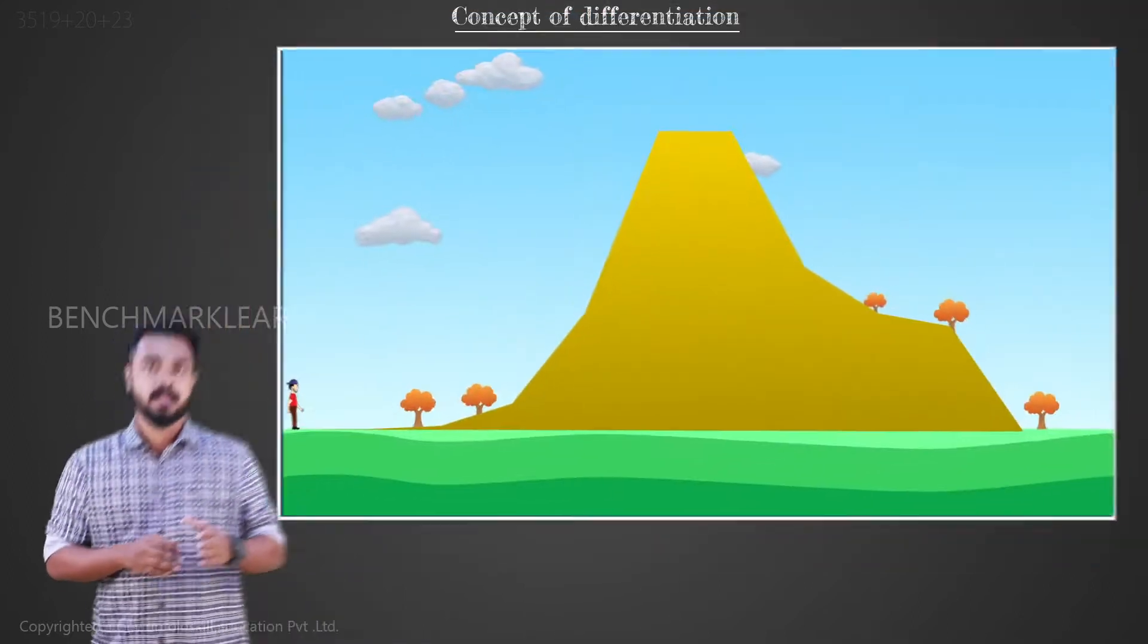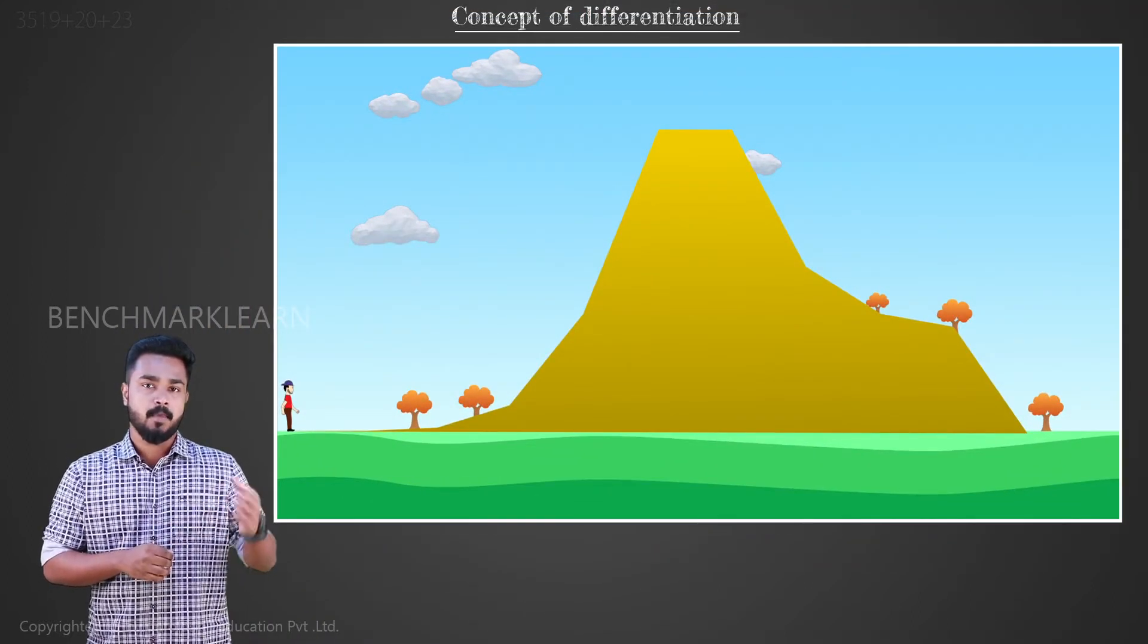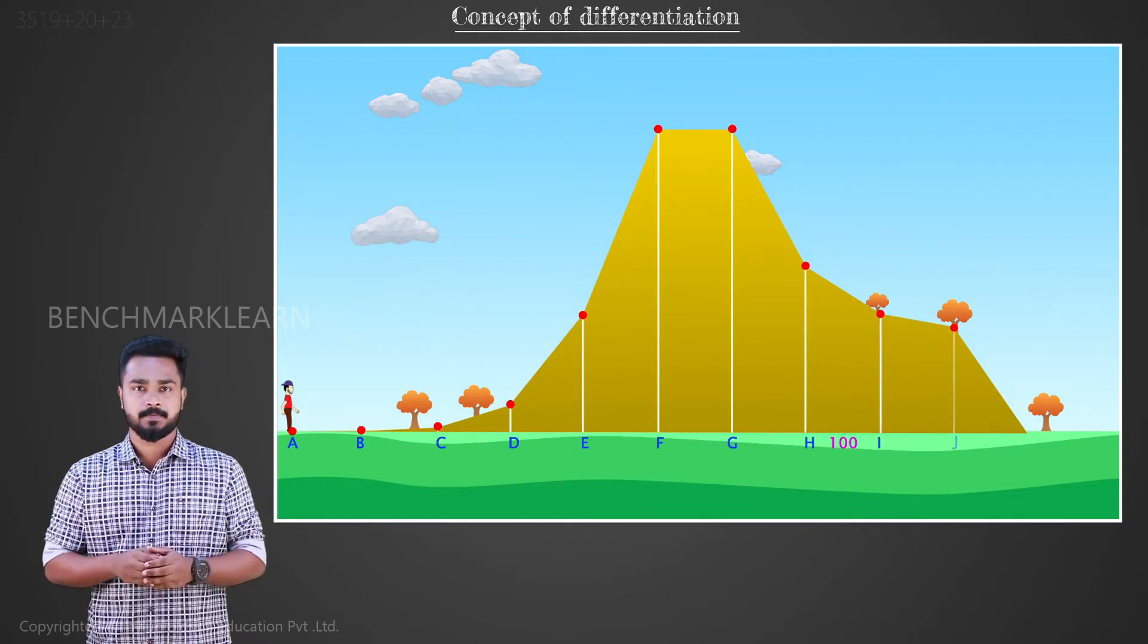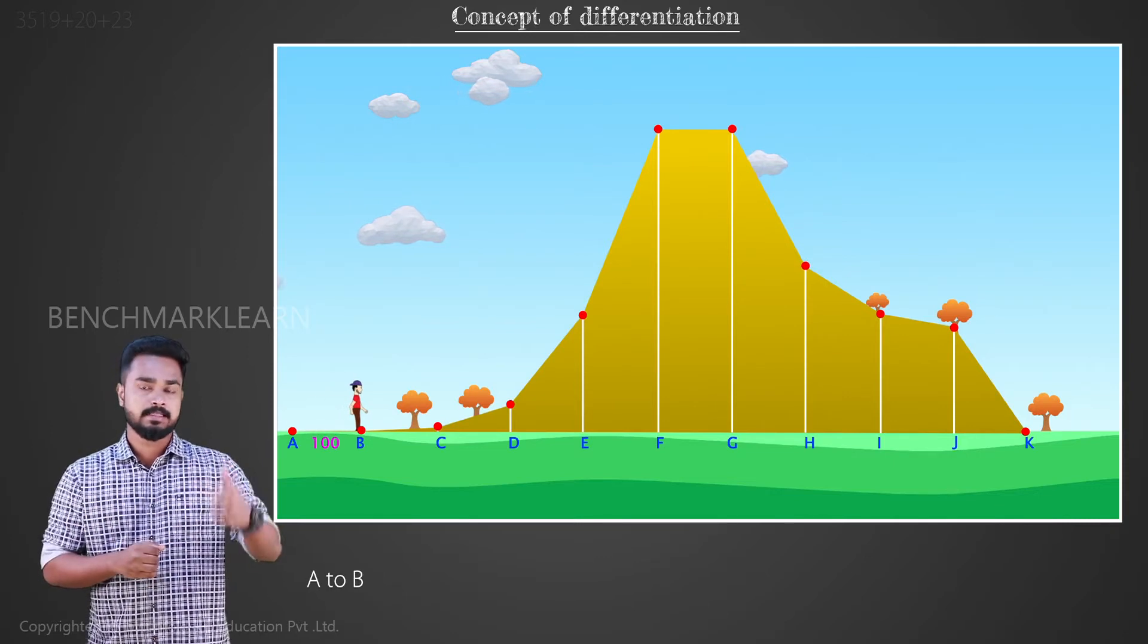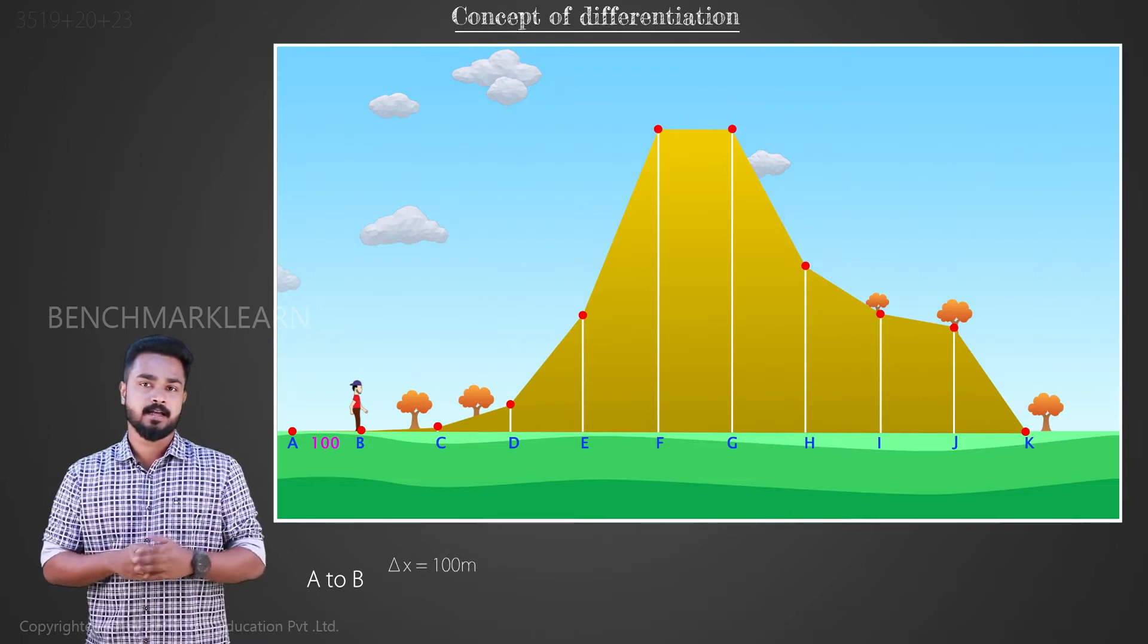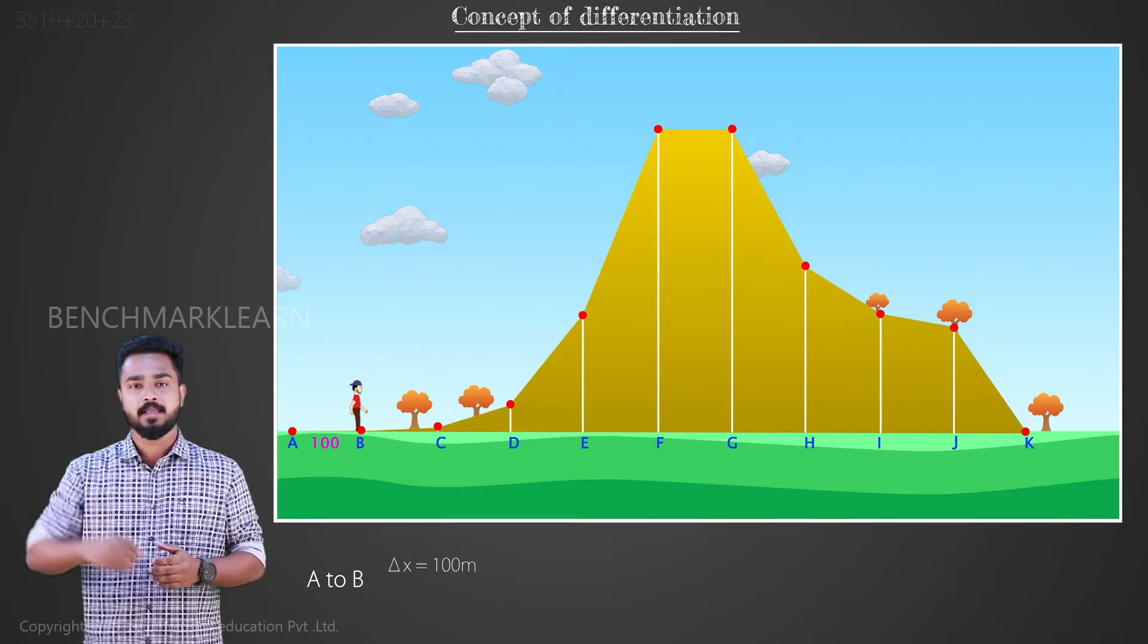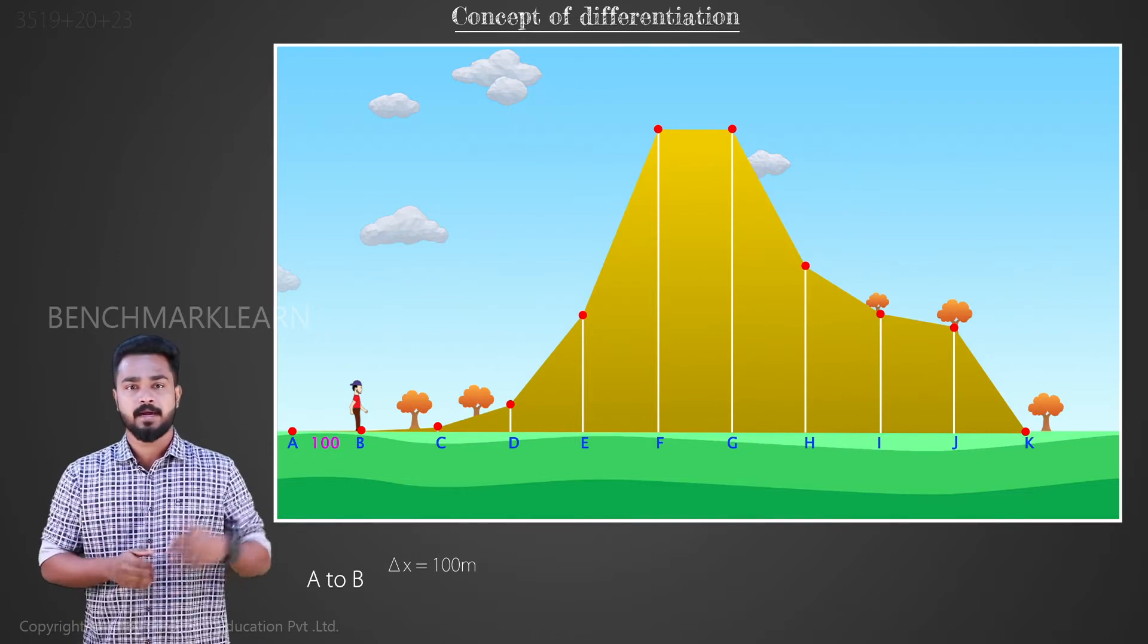Let's suppose you are standing at the foot of a hill. Mark the points A to J each 100 meters apart. If we moved from A to B, the distance travelled in the horizontal direction Δx is 100 meters. The height difference between A and B is 0. Let us denote the height difference by ΔH.